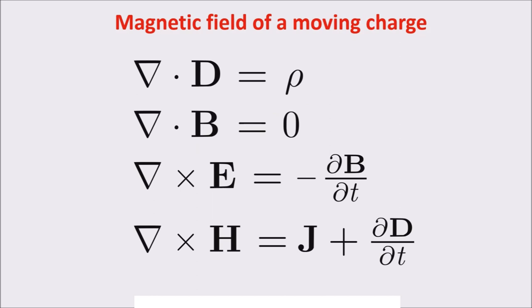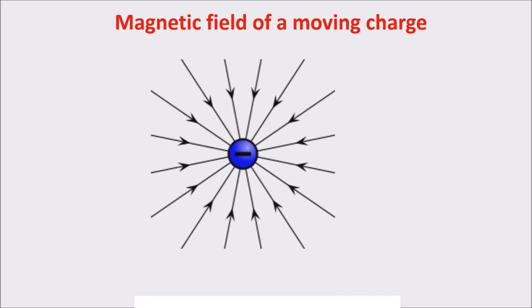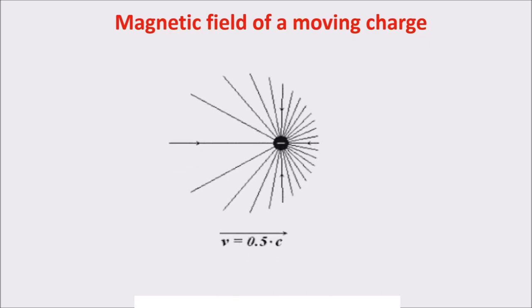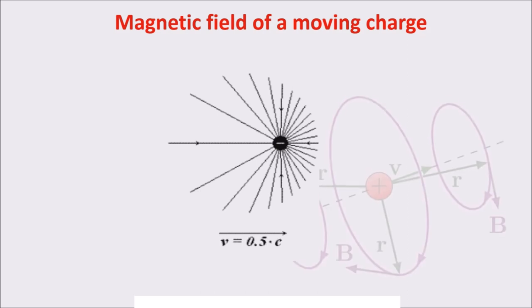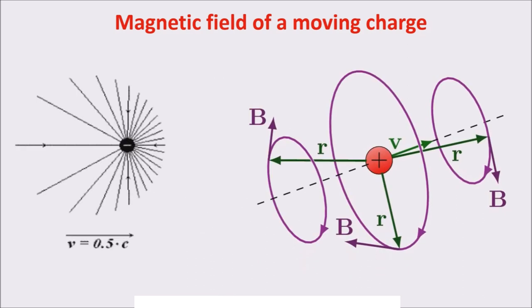We can start from a charge. A charge creates an electric field around itself, and if the charge moves, the electric field around is modified. This happens because part of the electric field is transformed into a magnetic field. The magnetic field is perpendicular to the movement direction, so a moving charge creates both an electric field and a magnetic field.